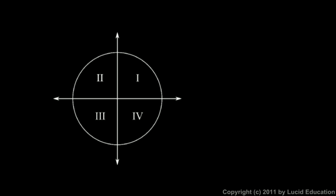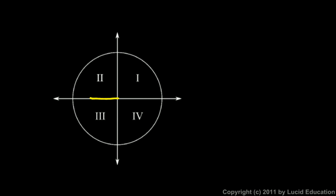Looking back at this diagram of the unit circle with the quadrants numbered 1, 2, 3, 4 — you should know from your understanding of trigonometry that because the sine of an angle is the y-coordinate, sine has to be positive in quadrants 1 and 2, and negative in quadrants 3 and 4. And because cosine is the x-coordinate, cosine values have to be positive in quadrants 1 and 4, and negative in quadrants 2 and 3.